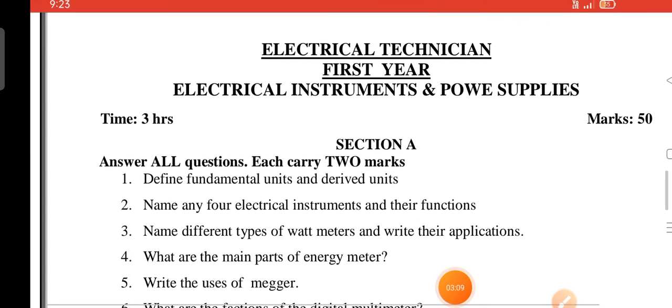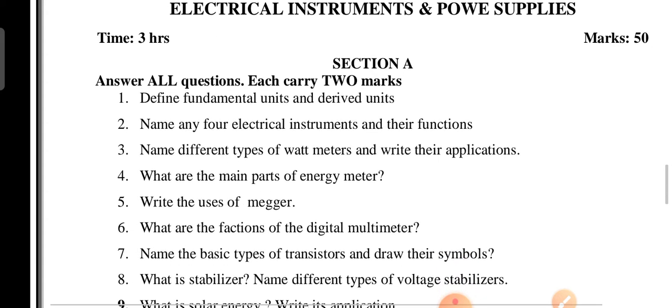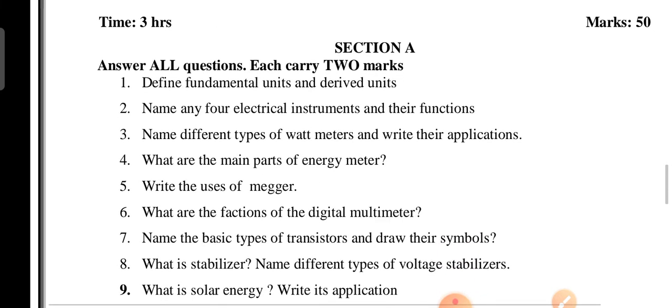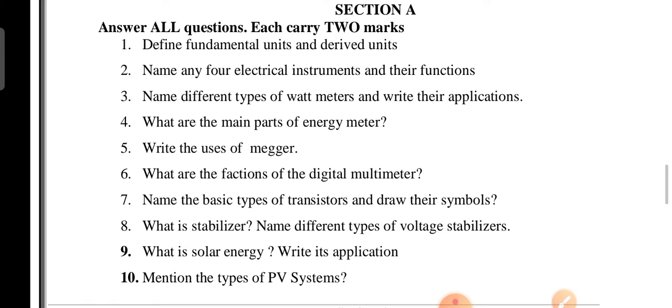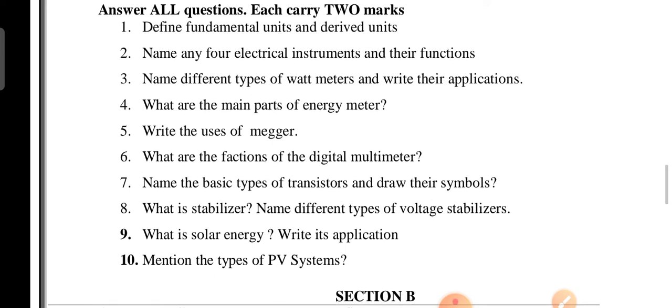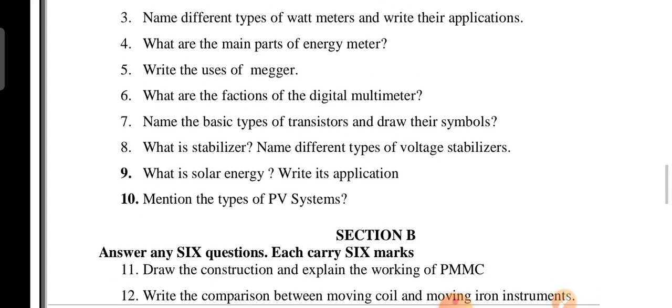Now I have a few questions from last year's question papers. This is the model question paper. The Section A questions include: fundamental units and derived units, name any electrical instruments and their functions, name different types of watt meters and their applications, and what are the main parts of the energy meter.